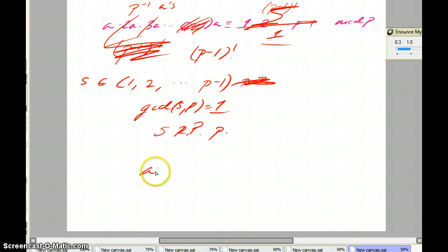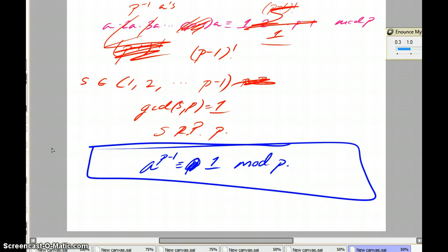So our conclusion is the great statement that a to the p minus 1 is congruent to 1 modulo p. Now this is true, to reiterate, for p prime, and all a, such that a is not a multiple of p.